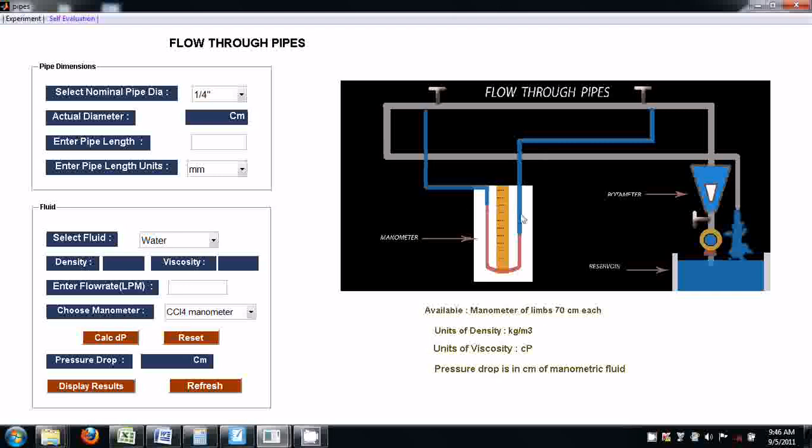This is the line diagram for the experimental setup. This is the fluid reservoir. Fluid is being pumped through this pipe, and the required flow rate can be set using this valve by opening and closing. The reading can be read from this rotameter.